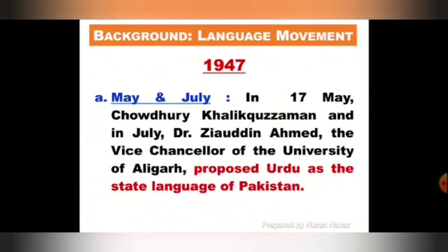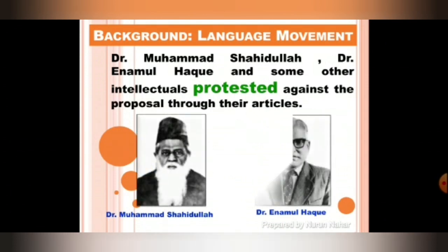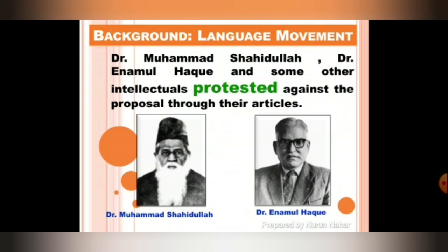In 1947, on 17th May, Chaudhuri Khaliquzzaman, and in the same year in the month of July, Dr. Ziauddin Ahmed, who was the Vice Chancellor of the University of Aligarh, again proposed Urdu as the state language of Pakistan. Dr. Muhammad Shahidullah, Dr. Enamul Haq, and some other intellectuals protested against it.